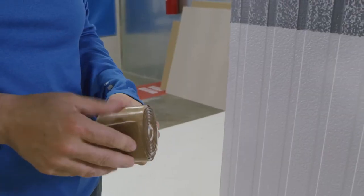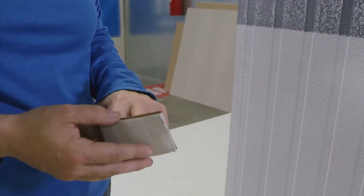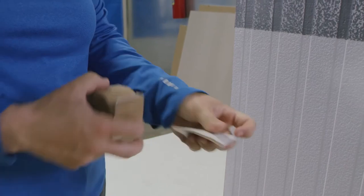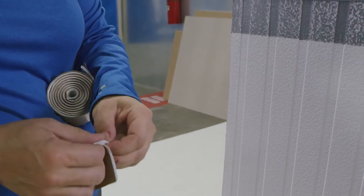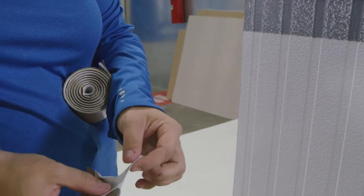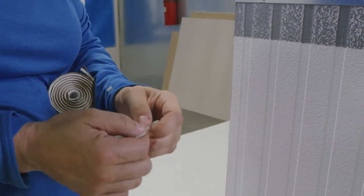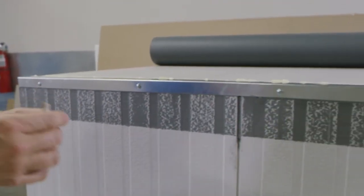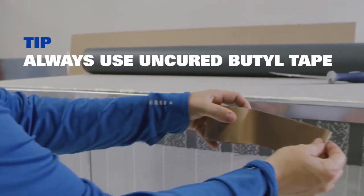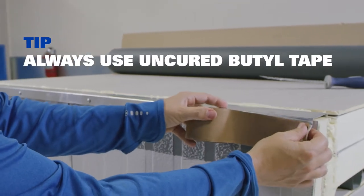So this is our two inch wide uncured butyl tape. When we pull it out, it is uncured. It does not go back. So what we're going to do is apply this over our fastener heads and it's going to act as an air seal behind our cleat for our metal edge. So I'm going to start it over here on this side and I'm going to cover our fasteners.